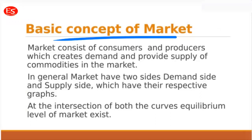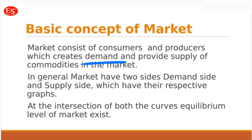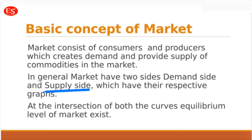In the concept of market, firstly we need to understand that the market consists of two sections: consumers and producers. Consumers create demand whereas producers create supply of the commodities available in the market. In general, we can say that the market has two sides — the demand side and the supply side.